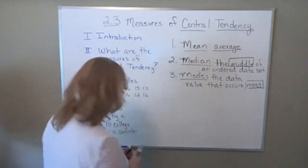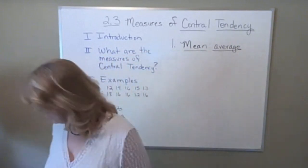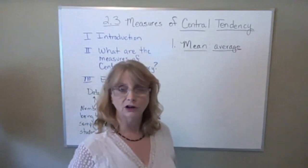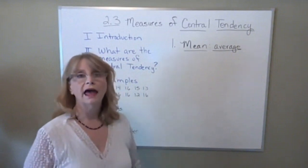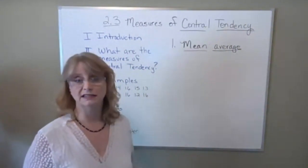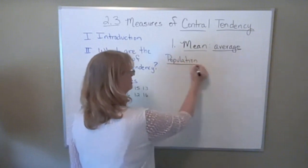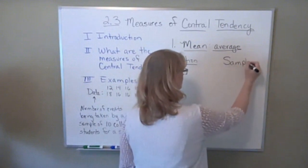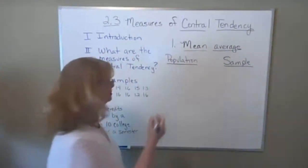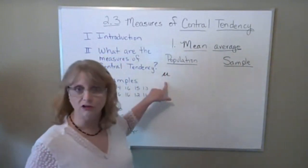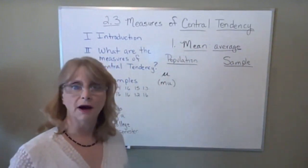We're going to focus on the mean as our first measure of central tendency. We have symbols we need to learn. For the mean, we have a symbol for the population mean — that would be a parameter — and a symbol for the sample mean — that would be a statistic. The symbol for population mean is a Greek letter called mu. It looks a little like a cursive U. Mu represents the population mean, always — even if you're reading an article and you see mu equals, it's talking about the population mean.